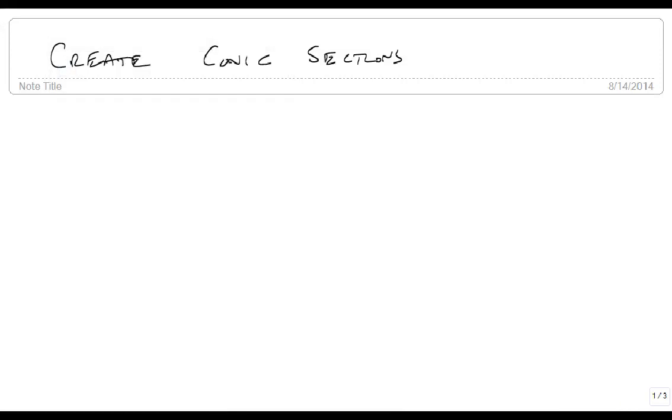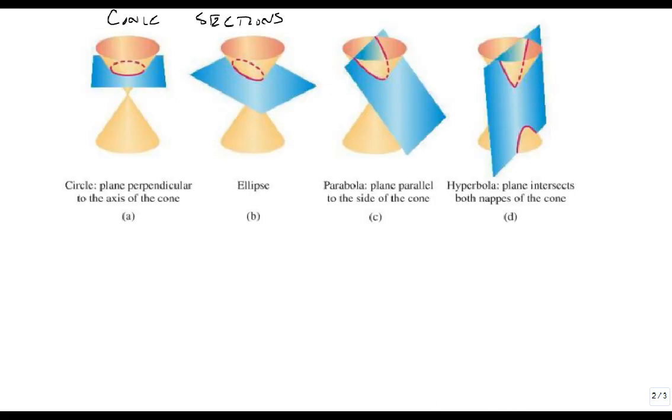We're now going to talk about how we create conic sections. Conic sections are created by taking that right circular cone and intersecting it with a plane. This is what we're talking about. These are the four conic sections.